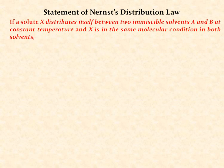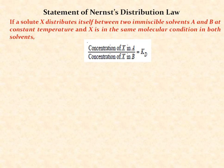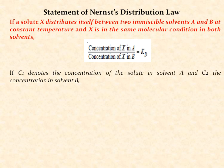Now we will see the statement of the NERNST distribution law. If solute X distributes itself between two immiscible solvents A and B at a constant temperature — it is very important that it is at a constant temperature — and X is in the same molecular condition in both solvents, then the ratio of the concentration of X in solvent A to the concentration of X in solvent B is represented by KD, that is the distribution coefficient.